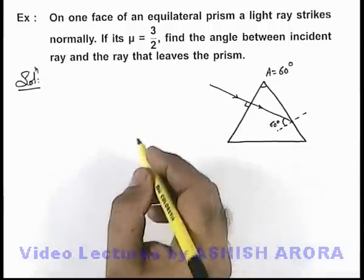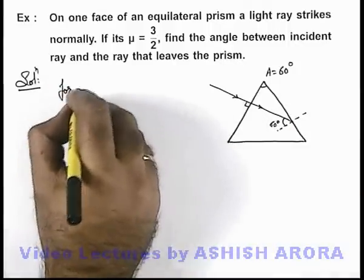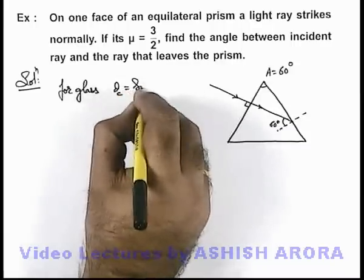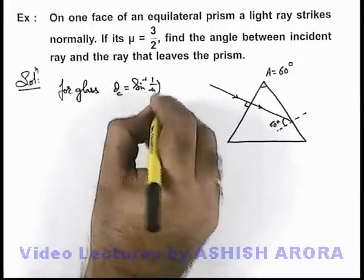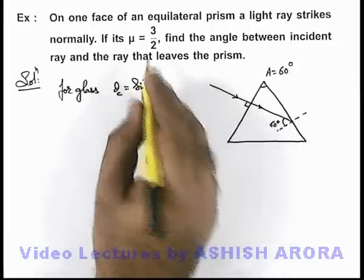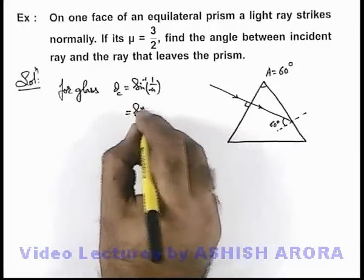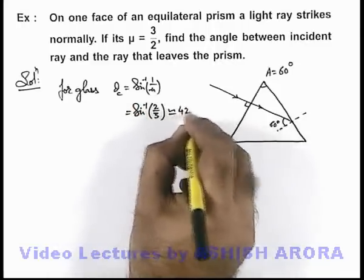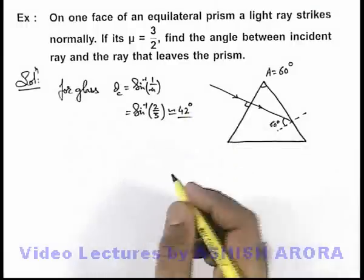In this situation, we know that for glass the critical angle is given as sine inverse of 1 by μ. If we substitute the value of μ, this comes out to be sine inverse of 2 by 3, which is approximately 42 degrees.